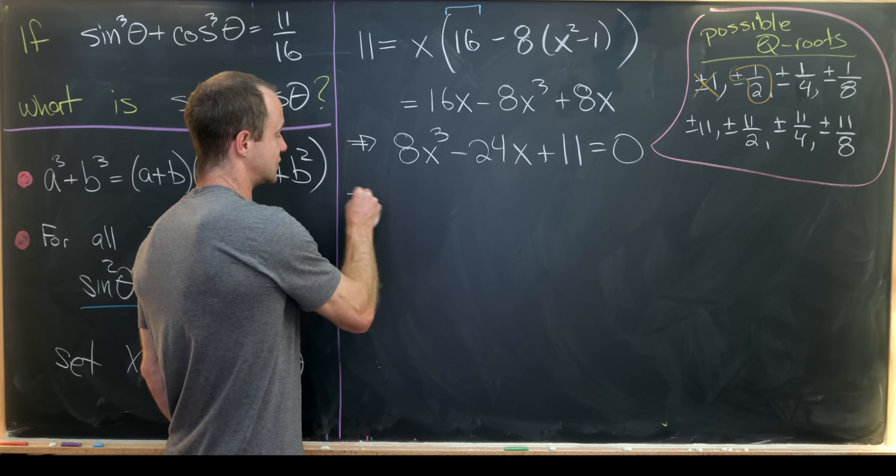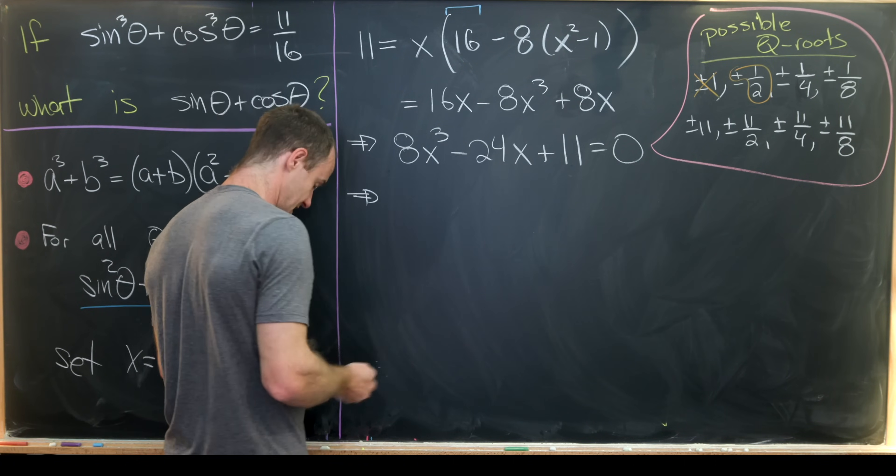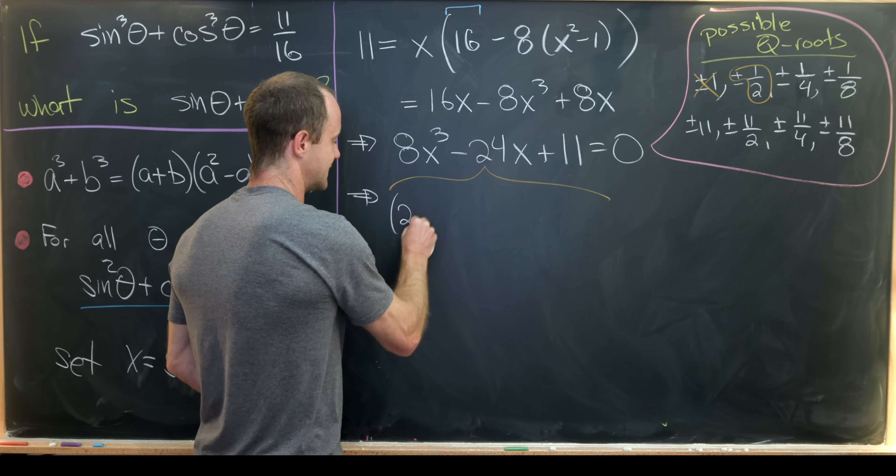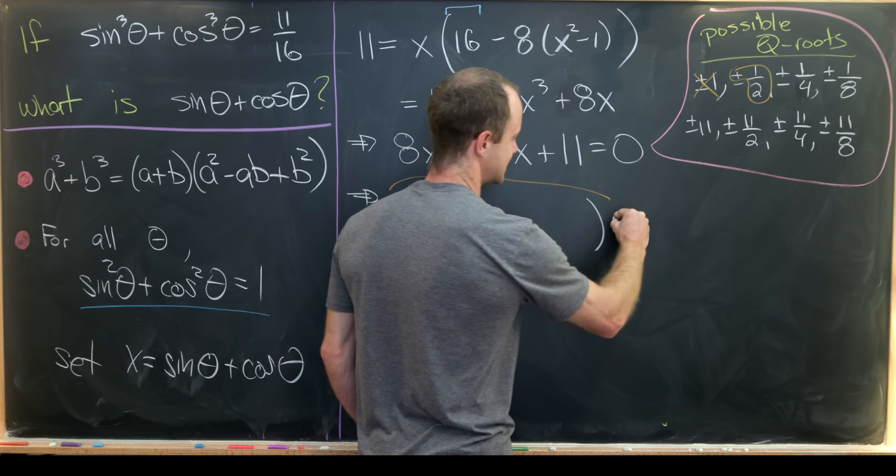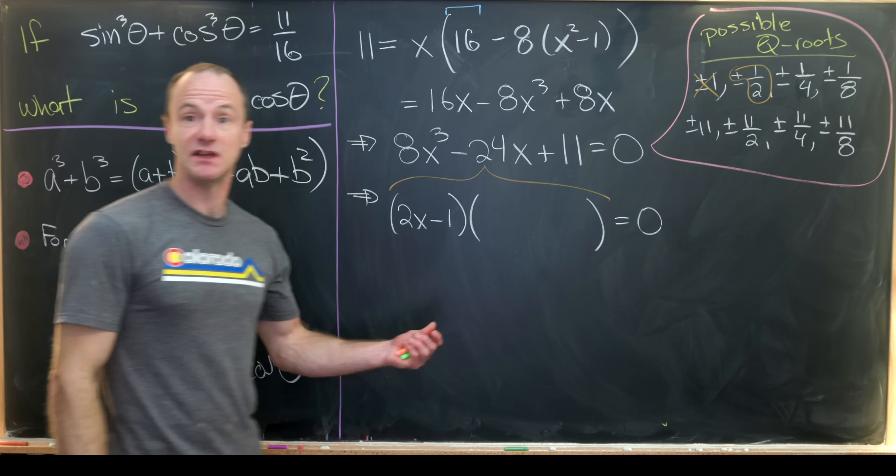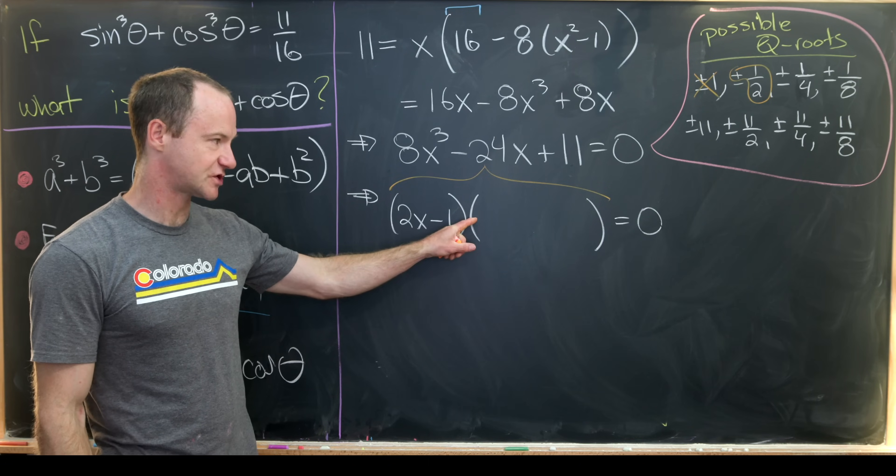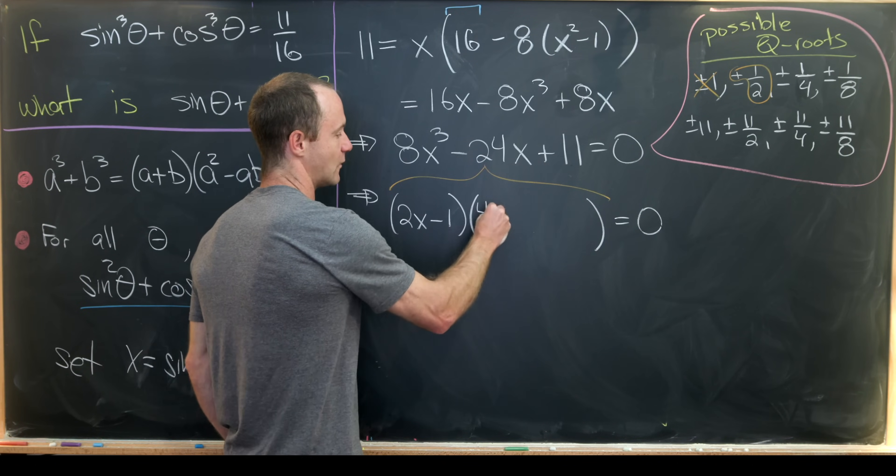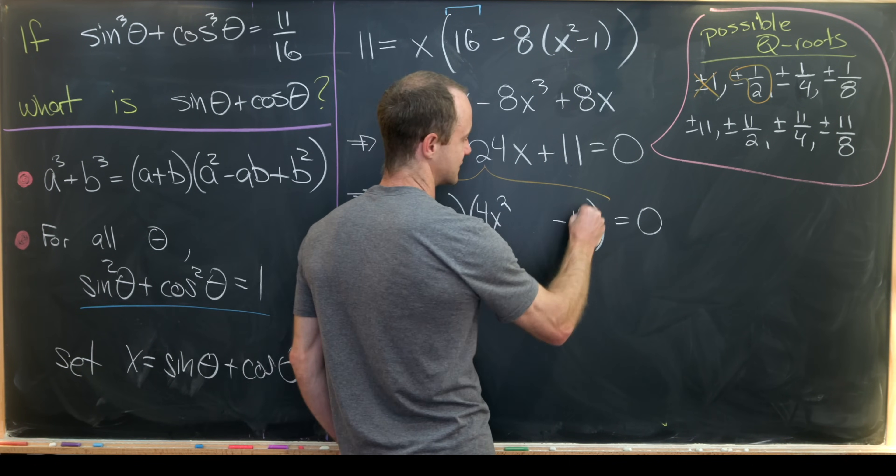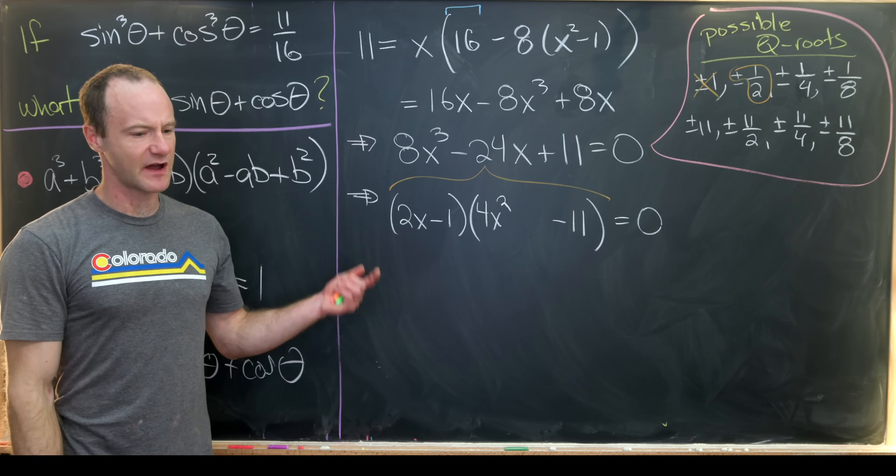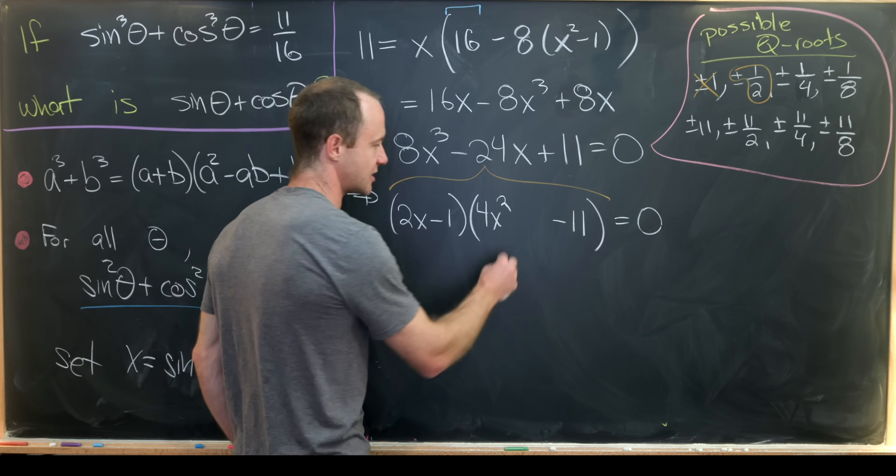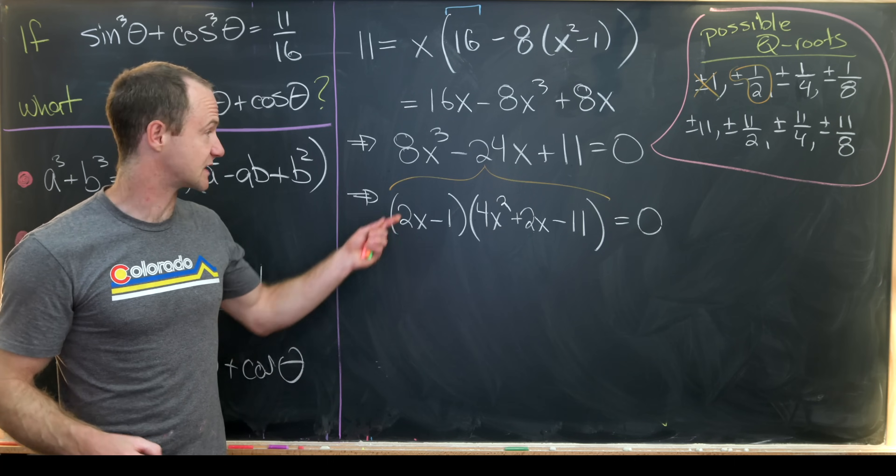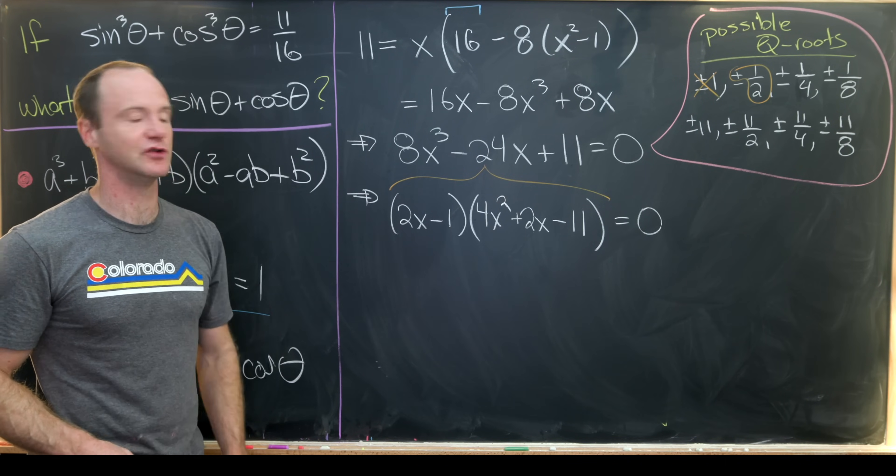But if a half is a solution to this polynomial equation, that means that this thing should factor with 2x minus 1. So we should have this is equal to 2x minus 1 times something, and then obviously equals 0. So we immediately know what the first term here and the last term here is based off the fact that we need to multiply to 8. So this should be 4x squared, and we need to multiply to 11, so this should be minus 11. I think your best bet is just to guess and check this middle term, and we'll see that it needs to be 2x.